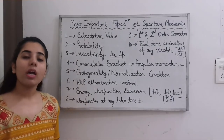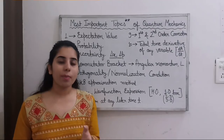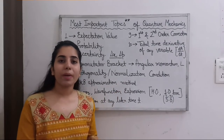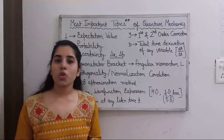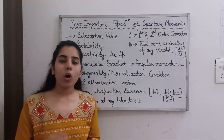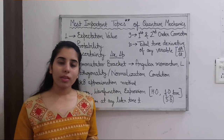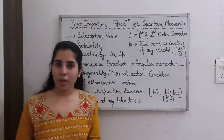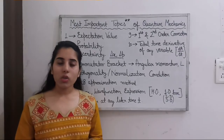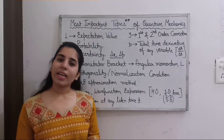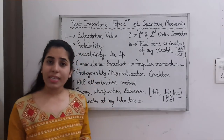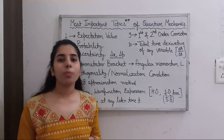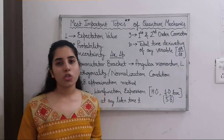The next topic is the WKB approximation method. Most of the time questions will ask about finding the energy. Along with that, if they ask about the dependency of energy on the quantum number N, there is a short trick for finding the dependency of energy on the power of N. However, if all the options contain the same power of N, the short trick will not work — in that case you have to use the detailed method of the WKB approximation. All these topics are very easy. You just need to know the formulae and solve some previous year questions, and after that it will be very easy to solve any question based on these topics.